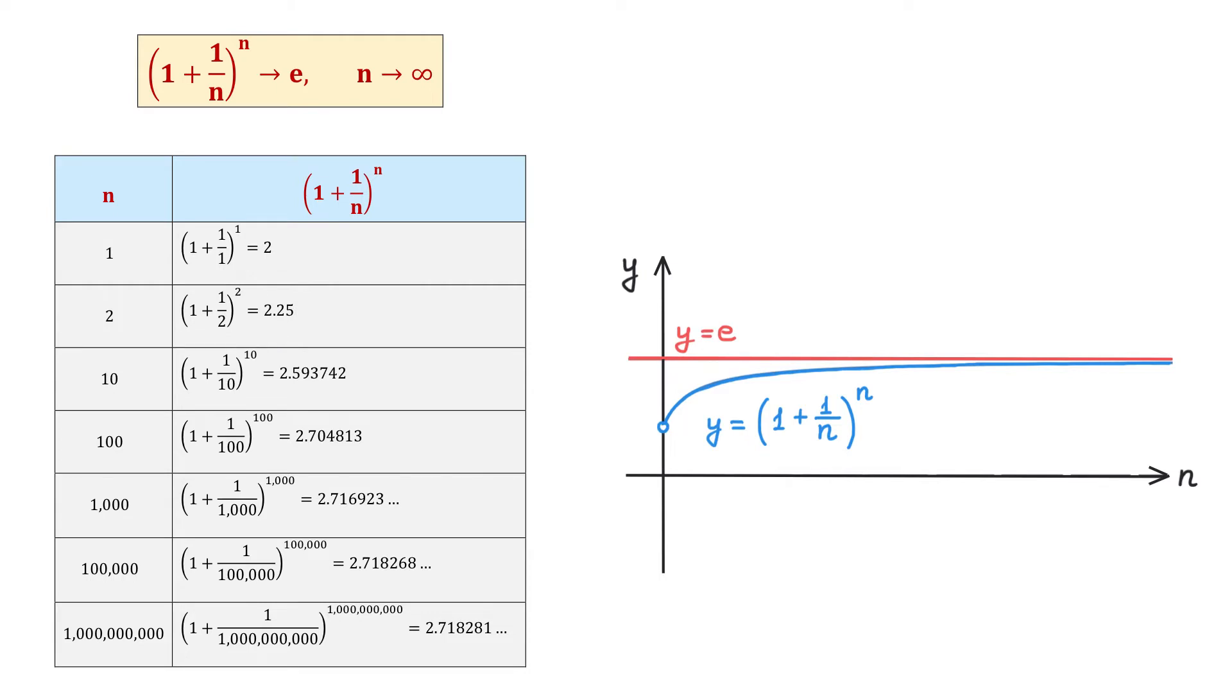From here, we see that the larger values we choose for n, the better approximations we get for number e. For example, when n is 1 billion, then the digits we see here are exactly the first digits of number e.